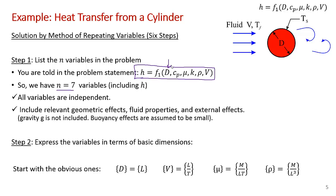Step two: express the variables in terms of basic dimensions. You can look these up in a table or derive them. D has dimensions of length. Velocity is length over time. Dynamic viscosity has dimensions of mass over length·time — that's kg per meter·second, which you can deduce from Newton's Law of Viscosity. Density is mass per unit volume, so mass over length cubed.